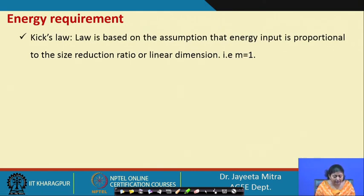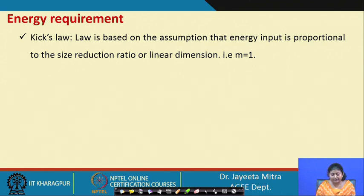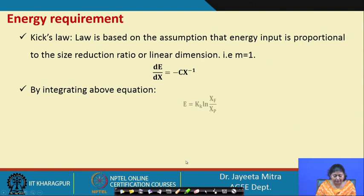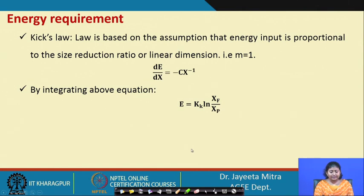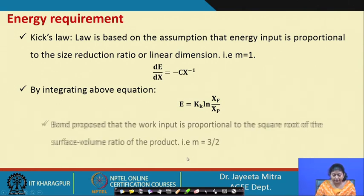Kick's law assumes energy input is proportional to the size reduction ratio, so m = 1. This gives dE/dx = −C·x^(−1), and by integration: E = K_K × ln(x_f/x_p), where K_K is Kick's constant. This law applies to coarse grinding.